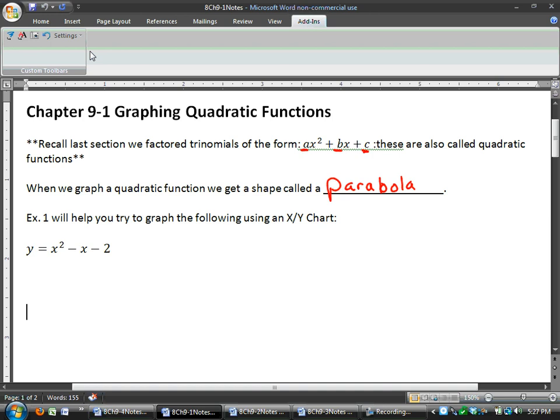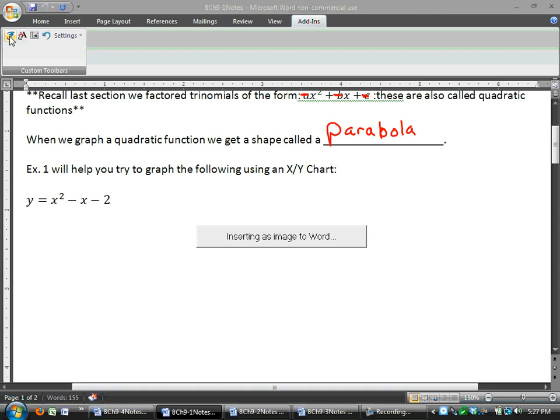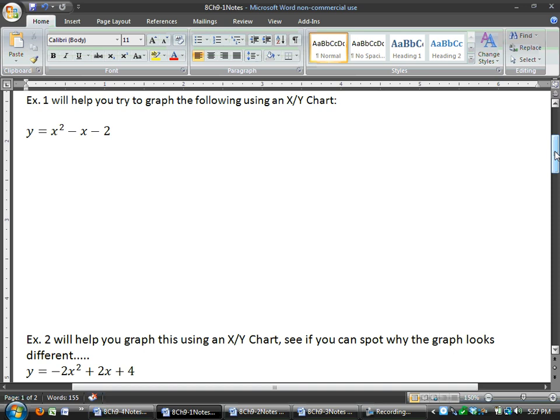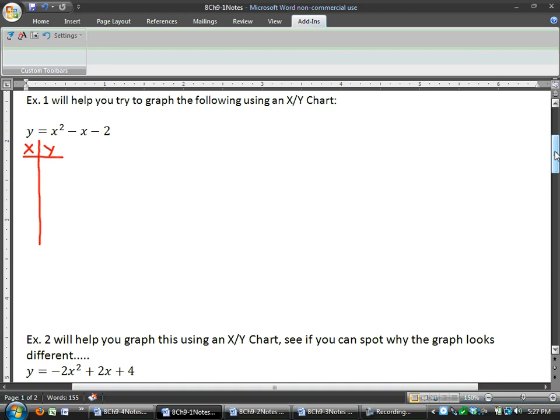So let's take a look at example one. Y equals x squared minus x minus 2. When we don't know what something looks like or how to graph it, we always make an xy chart. So we'll start by making our xy chart. Now, I'm not going to go through the entire process, because that's something we should already know. But let's do a couple small examples.